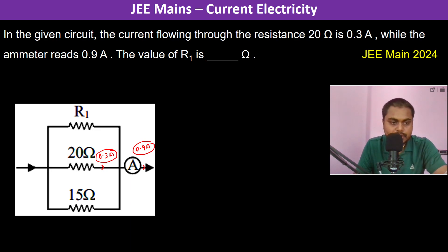If we compare the 20 ohm and 15 ohm resistances, the potential difference across both of them should be the same.